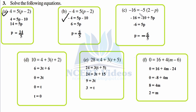Part c: minus 16 equals minus 5 times (2 minus p). Open the bracket: minus 16 equals minus 10 plus 5p. Transposing minus 10 to the left: minus 16 plus 10 is minus 6 equals 5p. Divide both sides by 5 — 5 cancels — so p equals minus 6 over 5.